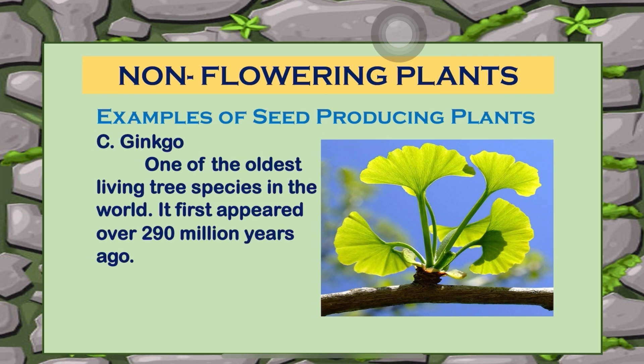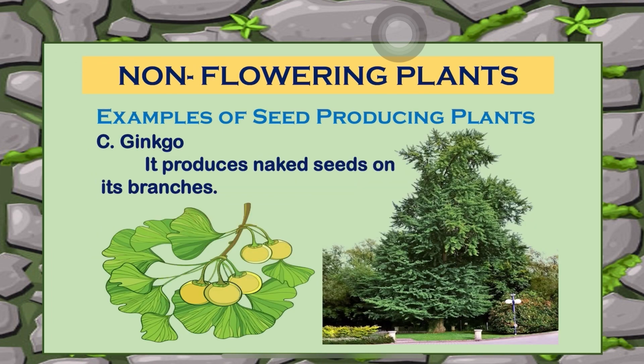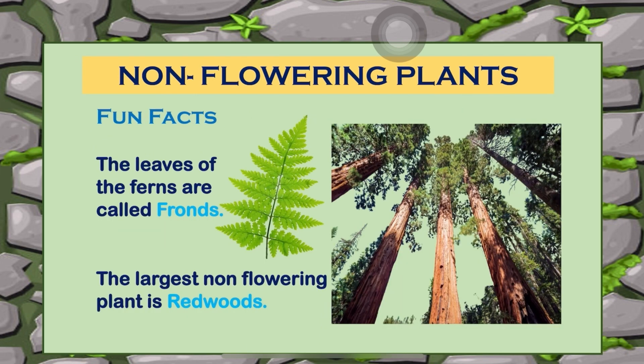The third example of seed-producing plants is ginkgo — one of the oldest living tree species in the world. It first appeared over 290 million years ago and produces naked seeds on branches. Some fun facts about non-flowering plants: the leaves of ferns are called fronds, and the largest non-flowering plant is the redwood.